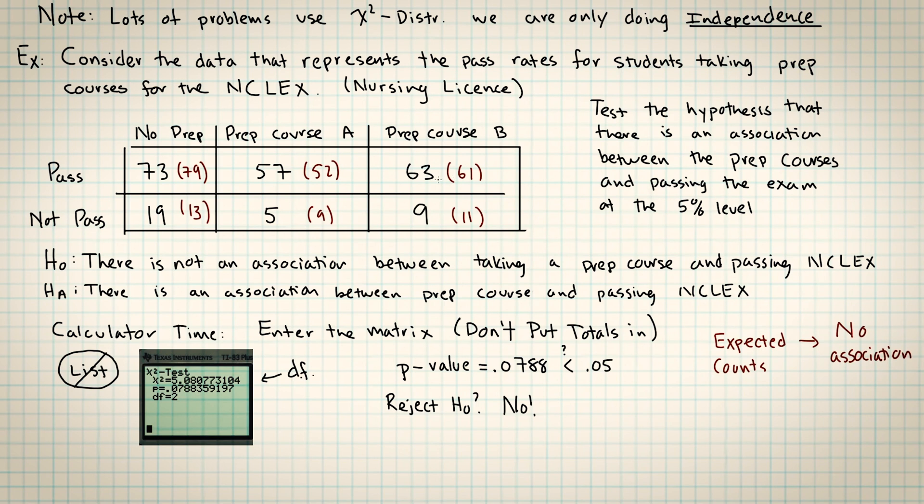When you look at these, you can see that actually our observed counts really aren't that different from the expected counts. If there was no association, we were expecting there to be 61 that passed in prep course B, and we actually observed that 63 passed. So these counts that we're observing really aren't that different from the counts that we're expecting. It's pretty believable to me that these differences could just come from random chance.